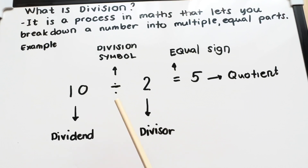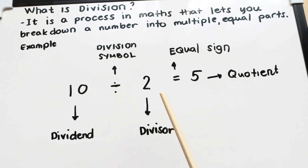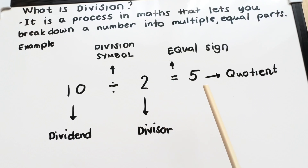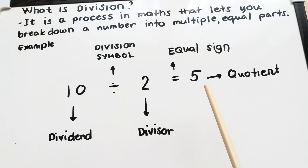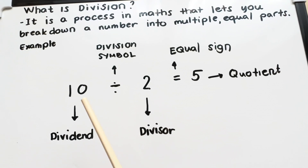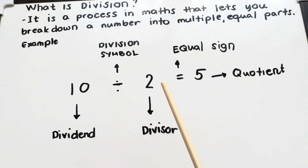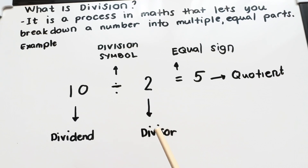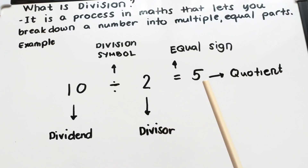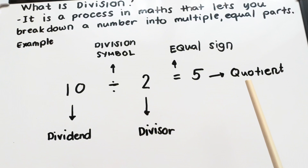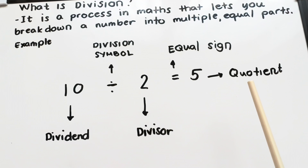10 divided by 2 is equals to 5. Wherein 10 is the dividend, 2 is the divisor, and 5 is the quotient.